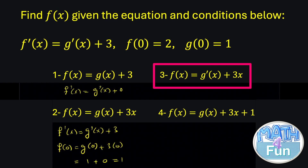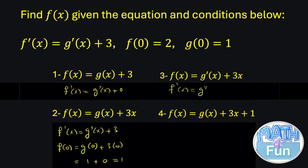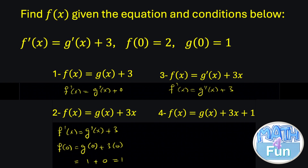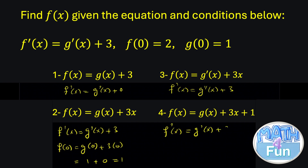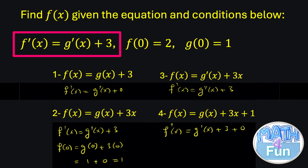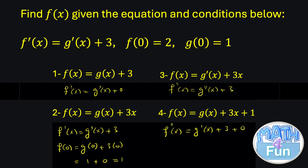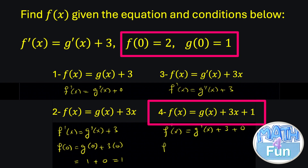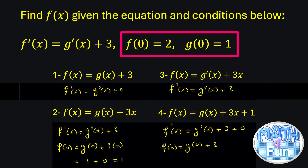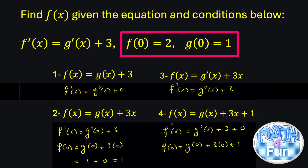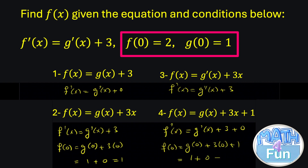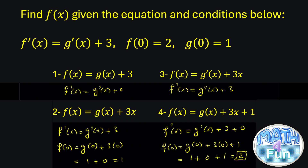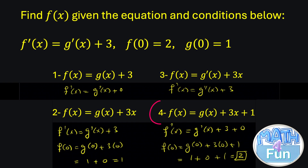For choice 3, f(x) equals g′(x) plus 3x, so f′(x) equals g″(x) plus 3. Since g″ is not given, this is wrong. For choice 4, f(x) equals g(x) plus 3x plus 1. Then f′(x) equals g′(x) plus 3 plus 0, which matches the condition. Testing f(0): g(0) plus 3 times 0 plus 1 equals 1 plus 0 plus 1 equals 2, which matches. So choice 4 is the correct answer.